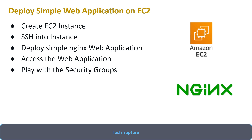In this video I'll just be deploying a simple web application to print basic content on the web page. If you're looking for a more complicated application using nginx on EC2, I'll create another video and share the link in the description. Here we're just going with the basic stuff and creating a simple web application on Amazon EC2.